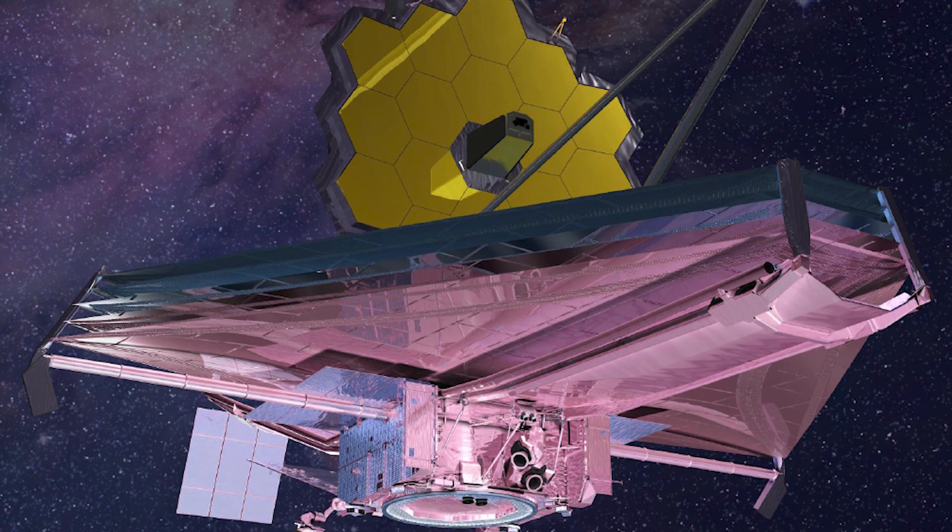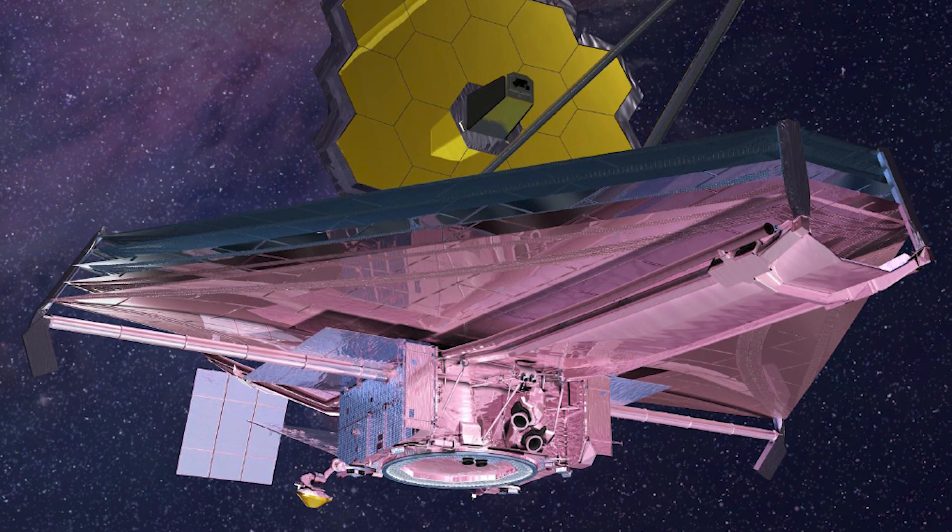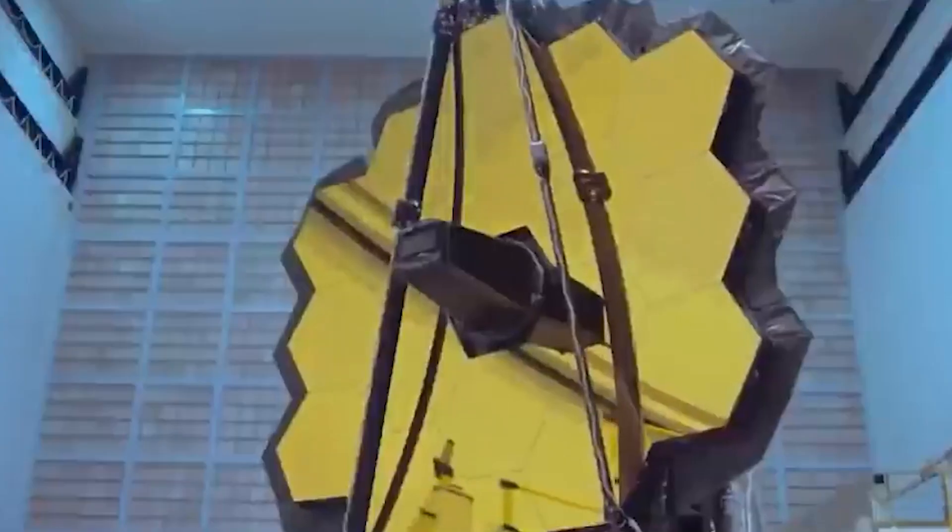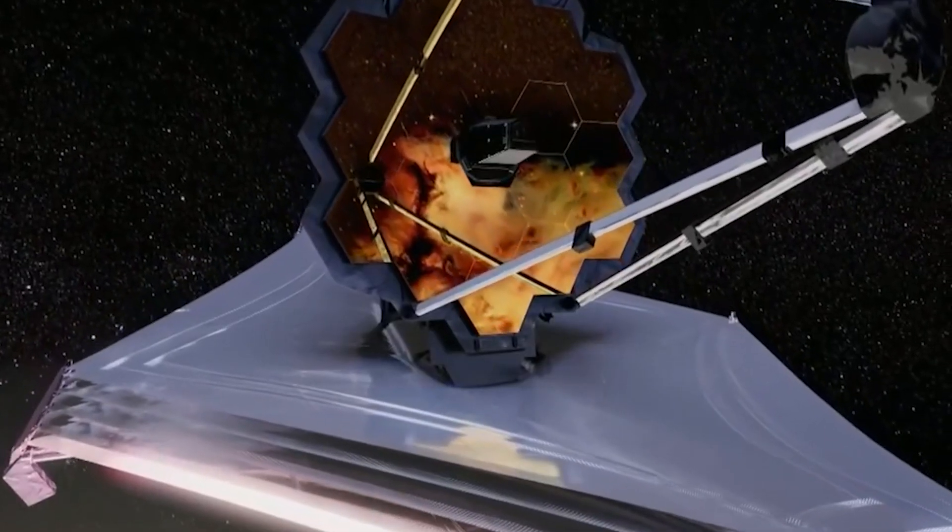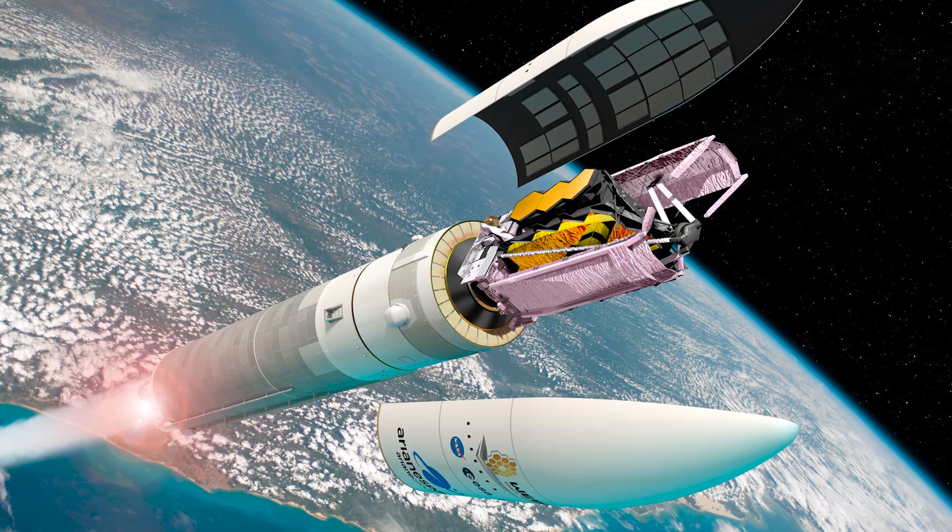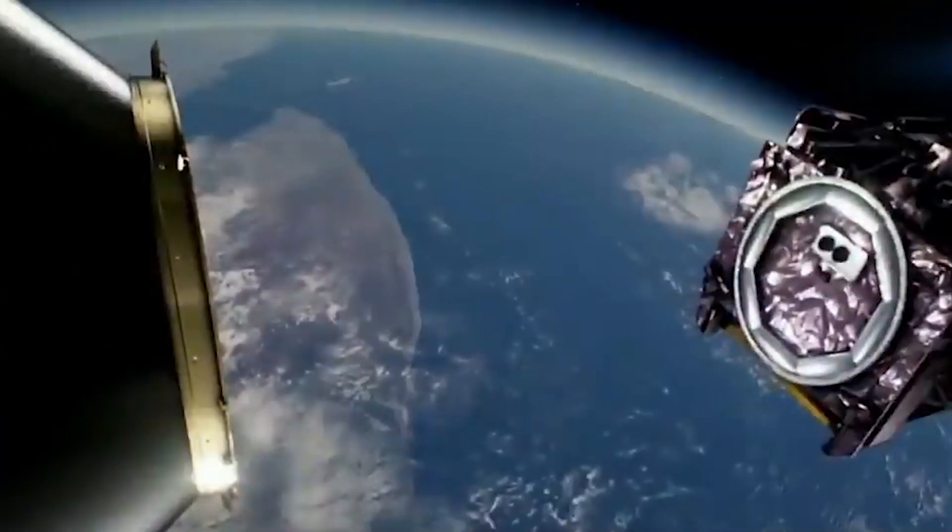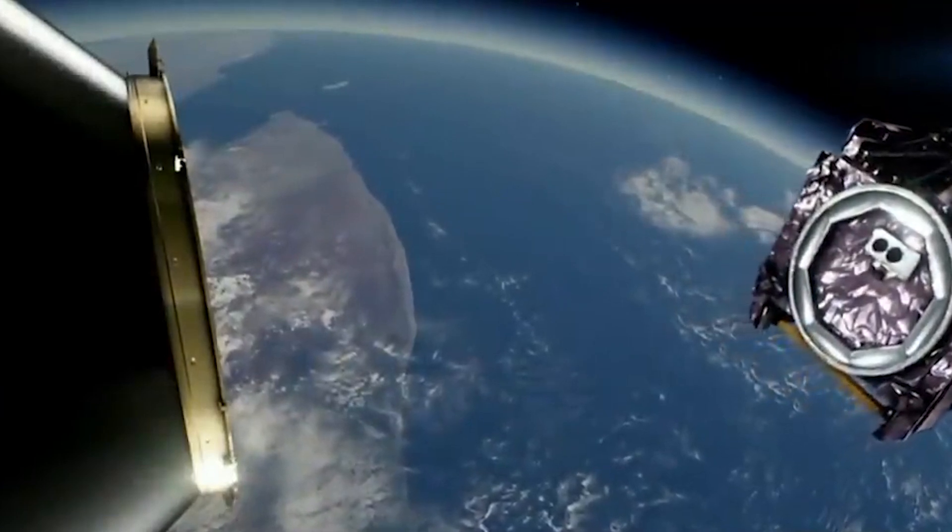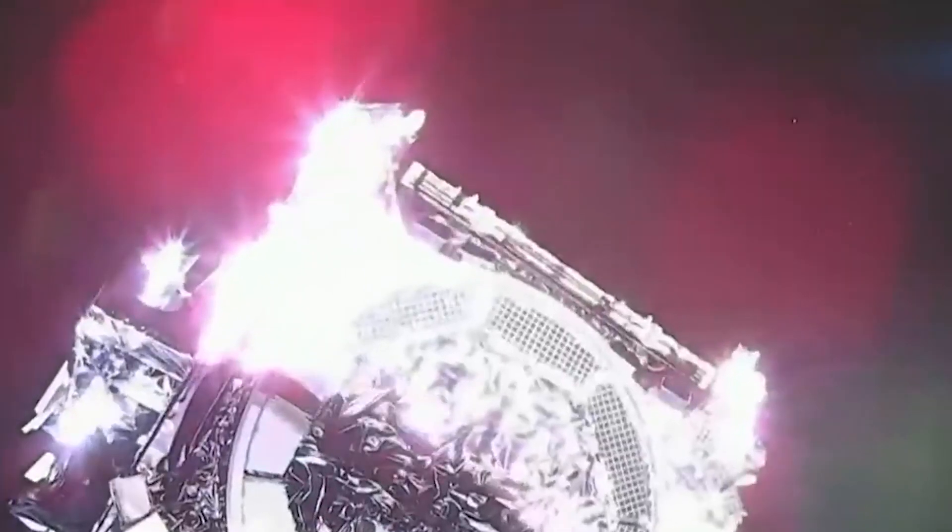The temperature of the James Webb Space Telescope must be kept below 50 degrees Celsius. The telescope is approaching a critical point, its observing spot known as the Lagrange point, where it will be able to observe weak signals from infrared sources without interference. This is a 1.5 million kilometer distance space neutral point from the Earth's surface.